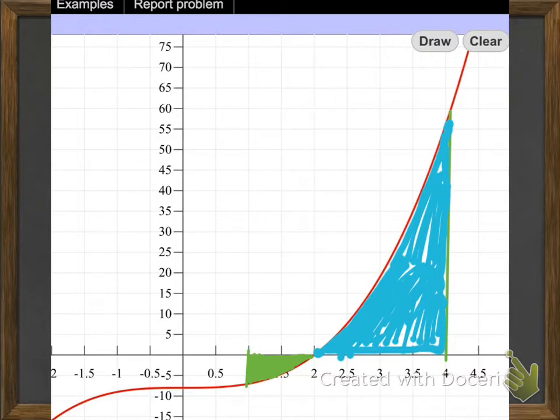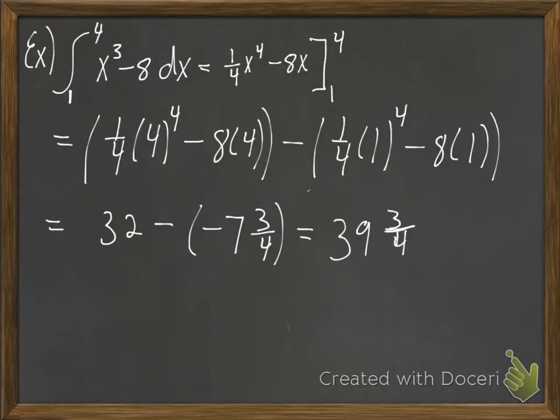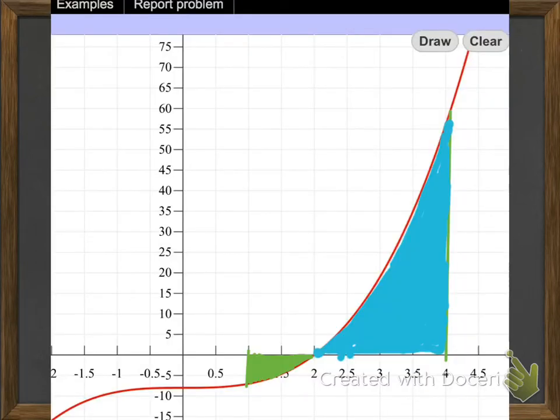And when we do the integral, what we're actually finding is the difference between the area above and the area below. So when you have a function like this that's both above and below over your interval, when you do the definite integral, you're actually finding the difference between the blue area and the green area.